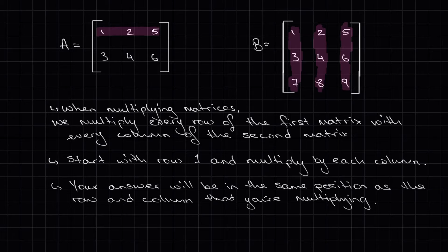When multiplying matrices, we have to multiply every row of the first matrix with every column of the second matrix. In this example, we would start with row one of matrix A and multiply it by each column in matrix B. Then we would take row two of matrix A and repeat the process.